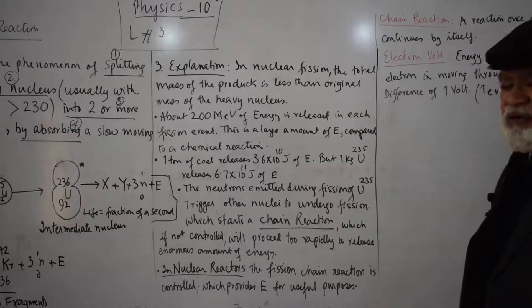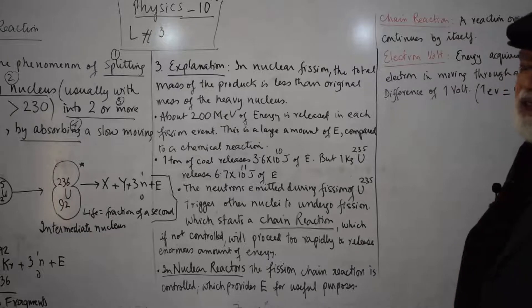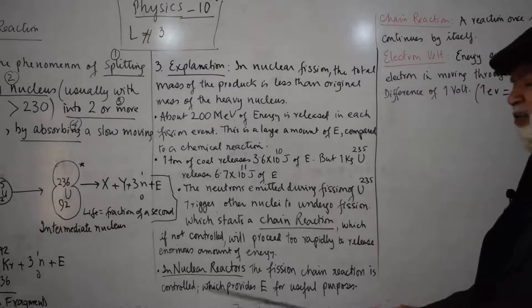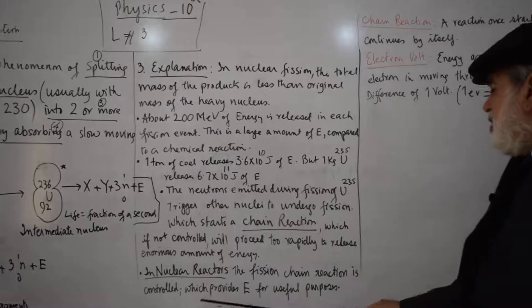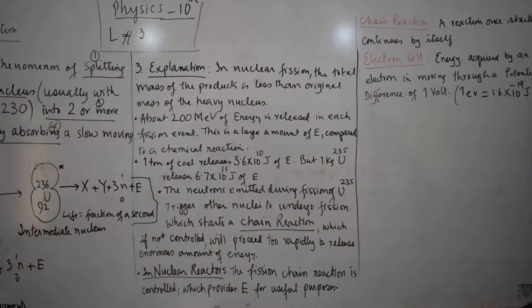Nuclear reactors, on the contrary, have a controlled fission process. That is the only difference. In nuclear reactors, the fission chain reaction is controlled, which provides energy for useful purposes.